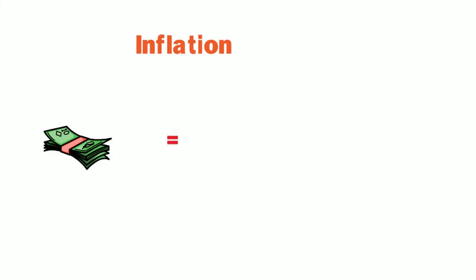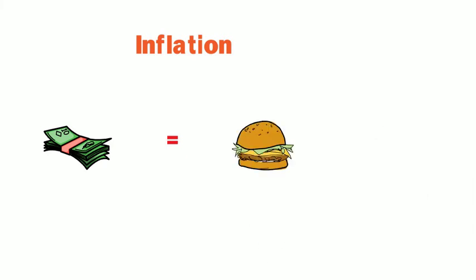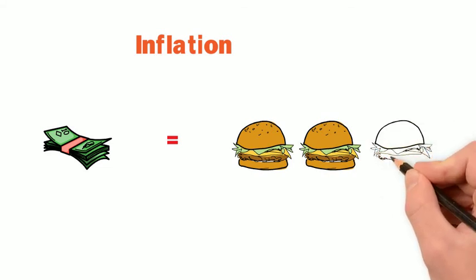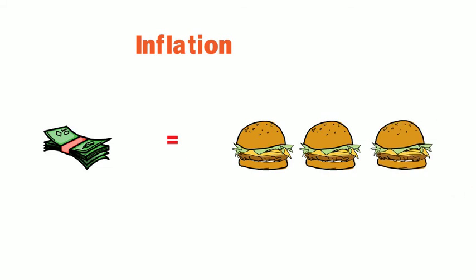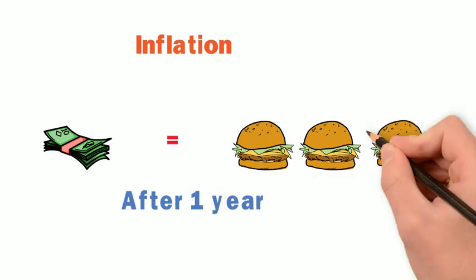Let us see how inflation works through an imaginary example. Today you can buy three burgers with $15, but due to very high inflation, after one year you will only be able to buy two burgers with the same $15. This is how inflation works.